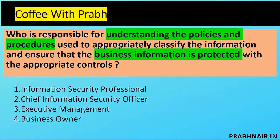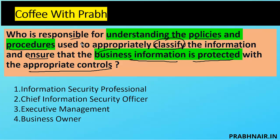Next coffee shot: Who is responsible for understanding the policies and procedures used to appropriately classify the information, and ensuring that business information is protected with the appropriate controls? The keywords are: responsible, understand the policy, classify, ensure, and business information protected. Executive management is eliminated — they are ultimately accountable but not involved in every data classification. CISO is accountable for implementing security, so that is also removed. We're left with information security professional and business owner.